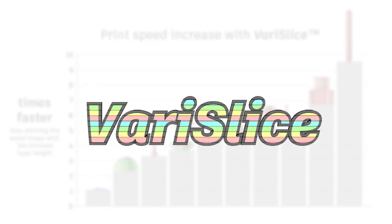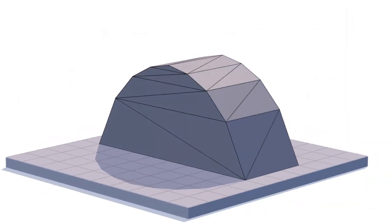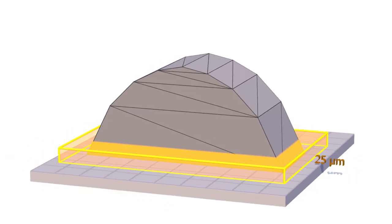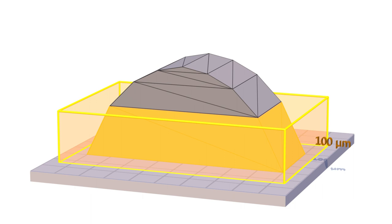So how does VeriSlice actually work? Here's an STL, which is a collection of triangles in 3D space. We start at the bottom of the 3D model, and we have a window of interest along the Z axis. The bottom of the window is our current Z level. The top of the window is the Z level plus the thickest layer thickness. For us, it's 100 microns.